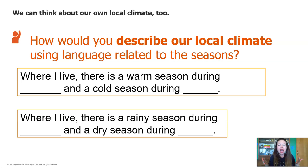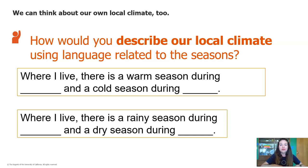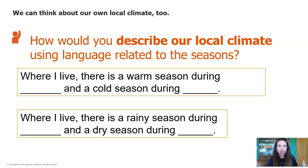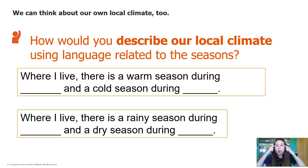So how would you describe our local climate using language related to the seasons? Remember that when we talk about seasons, meteorologists don't talk about spring, summer, fall. They talk about hot and cold seasons, and rainy and dry seasons. I want you to think about the climate where you live and use the sentence stems on the screen. The first one says: where I live, there is a warm season during blank and a cold season during blank. Think about what months you would use to fill in those two blanks.